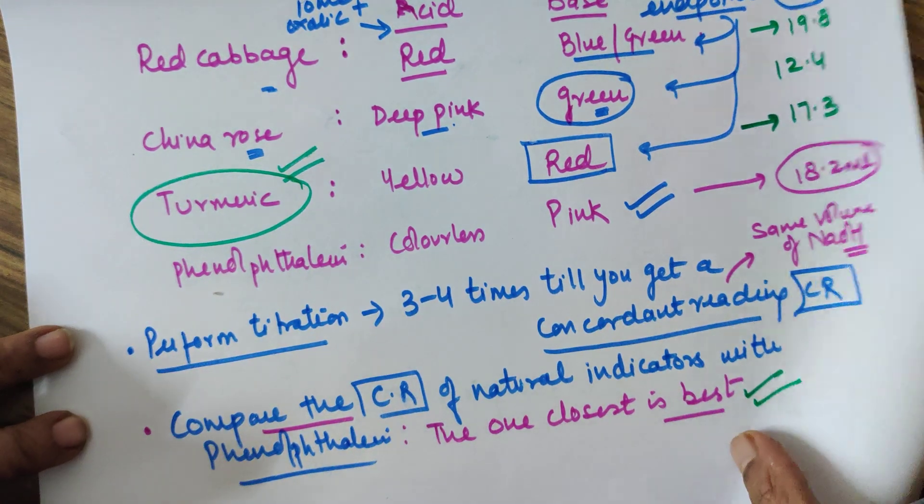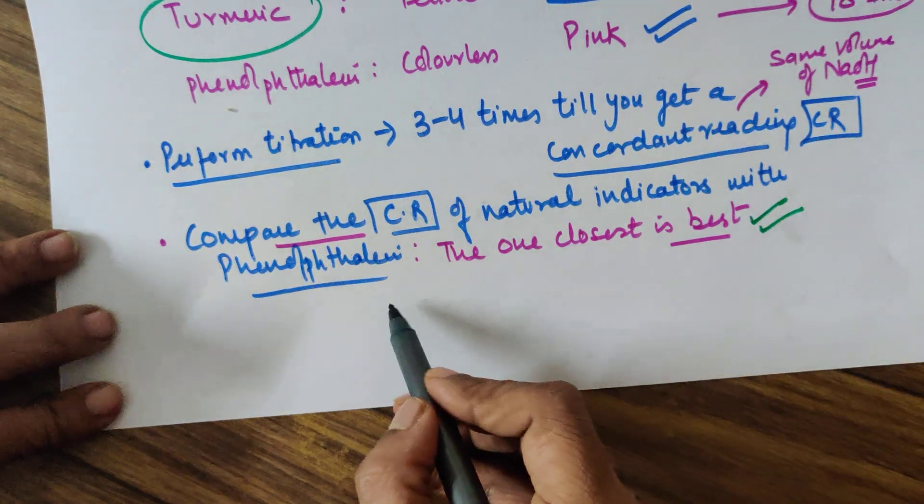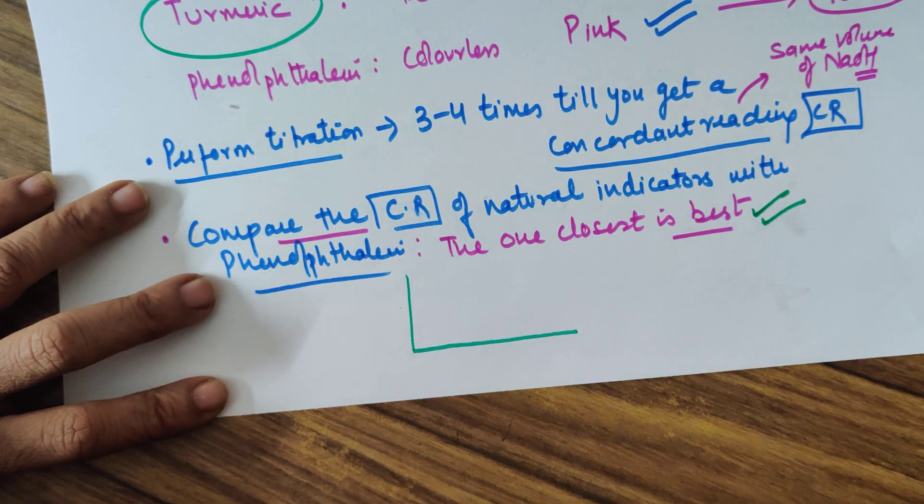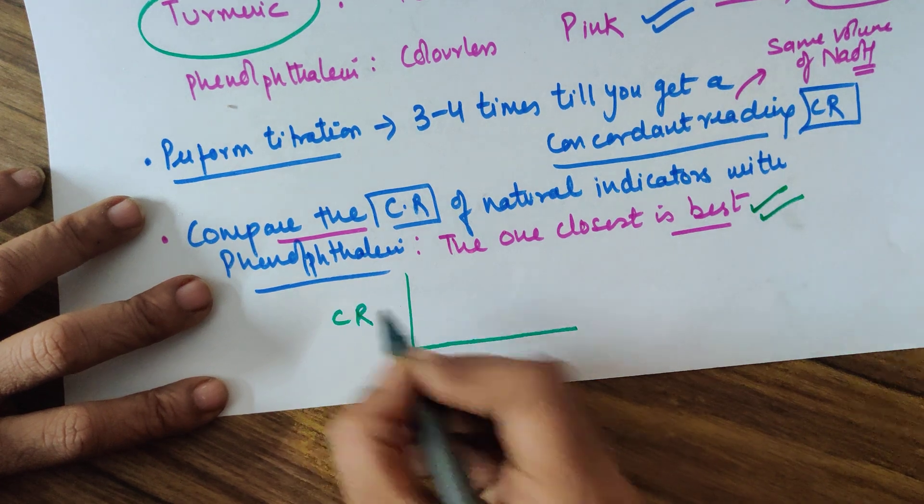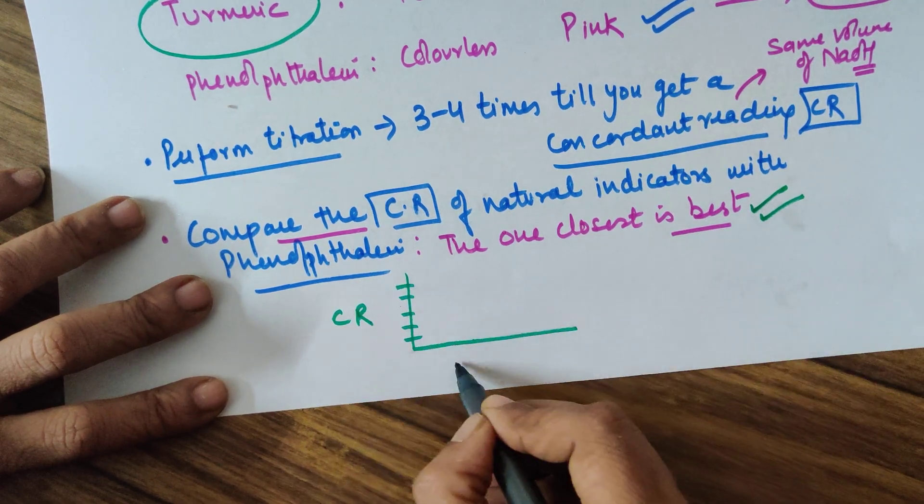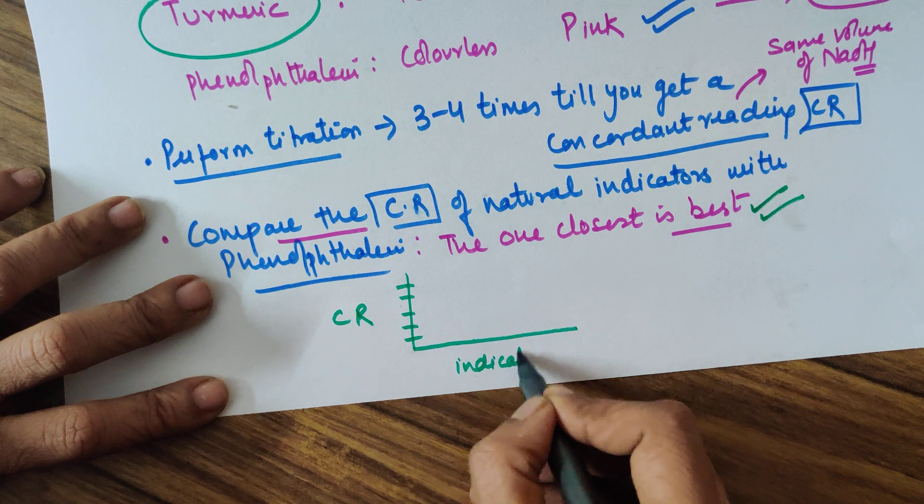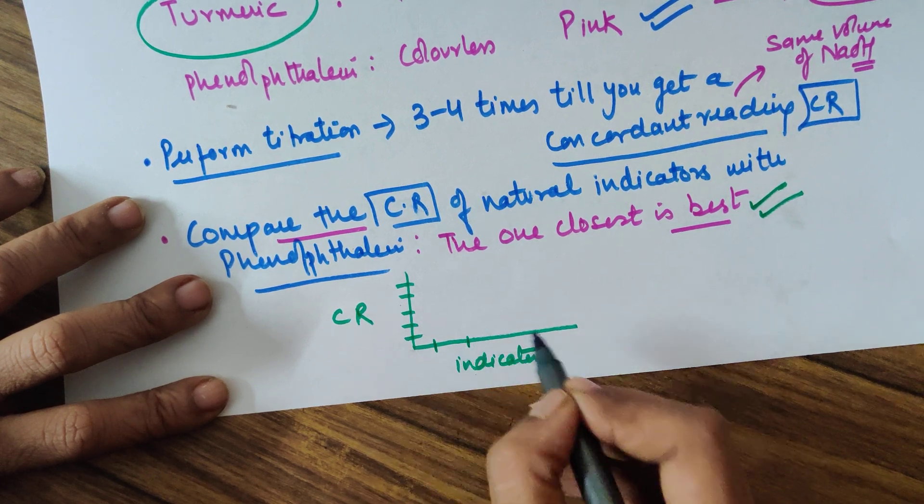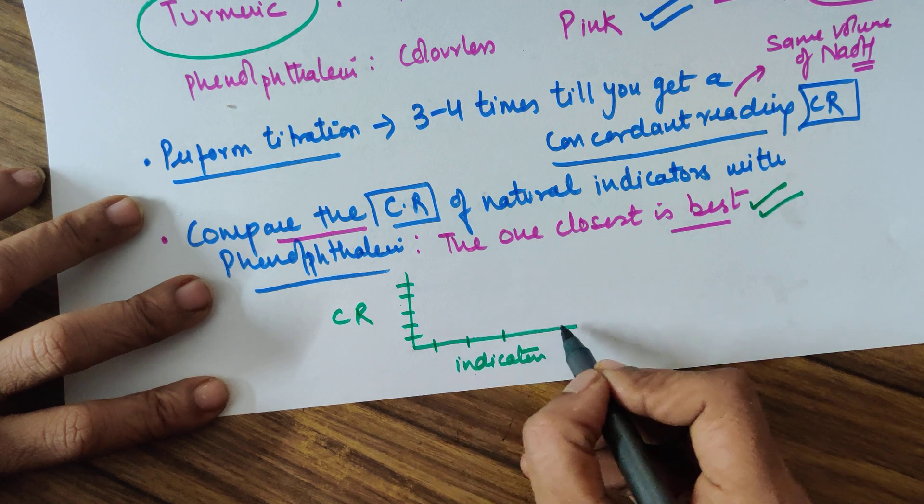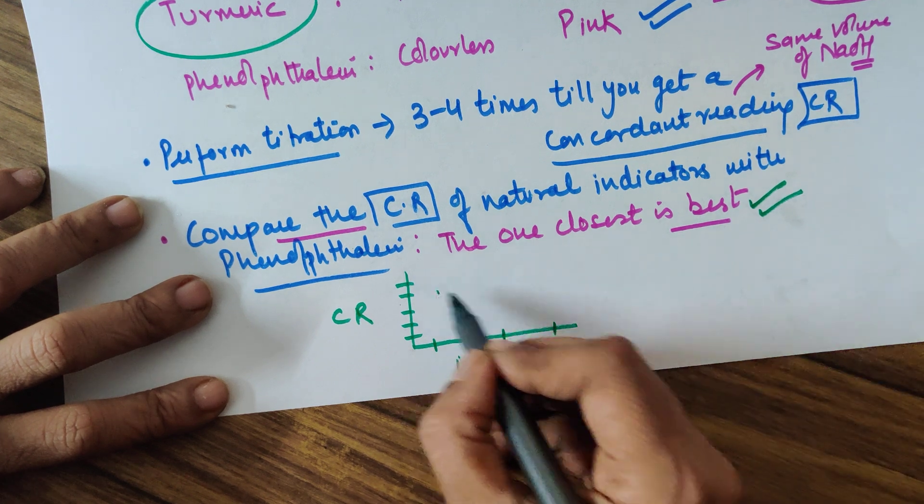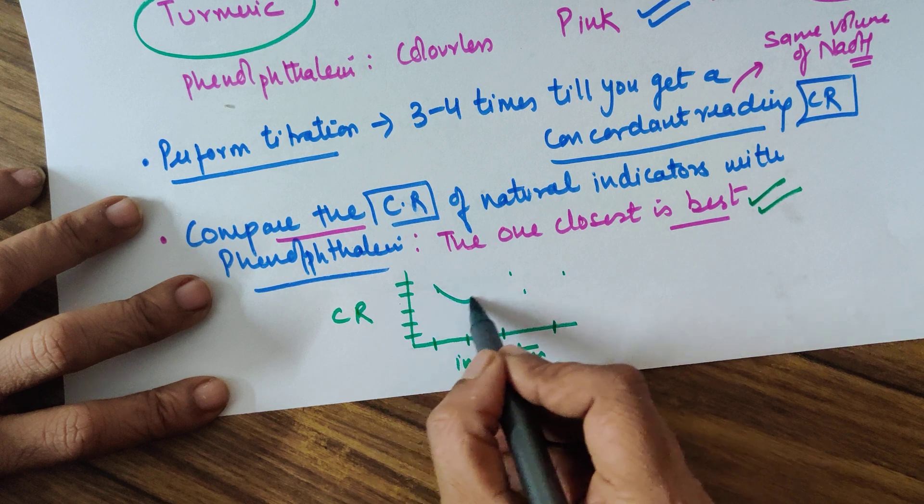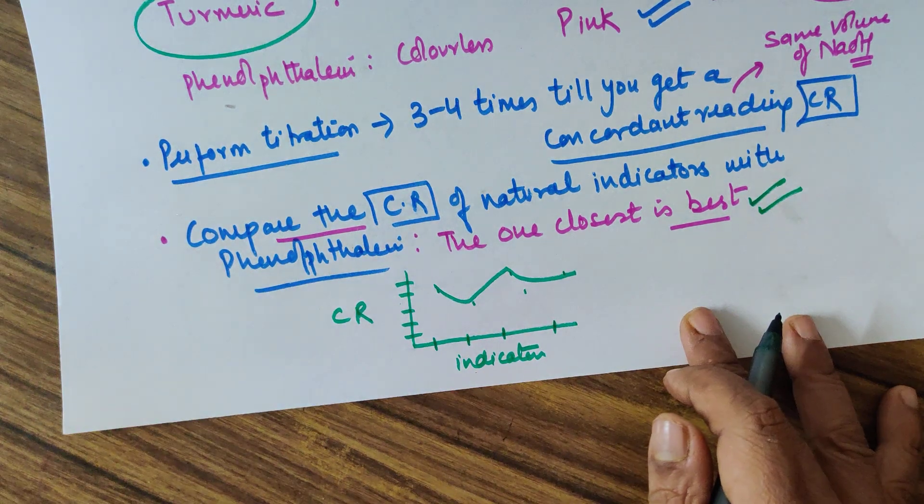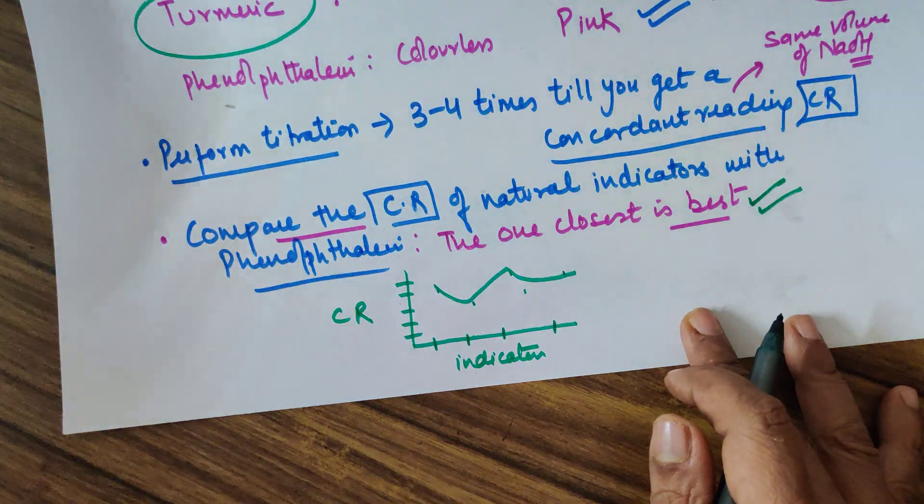You can even do one more thing in your titration project report: make a graphical representation where you can write concordant reading on this side, here you can write the indicators. Name the indicators like red cabbage, China rose, turmeric, phenolphthalein, then you can mark the values and plot the graph.